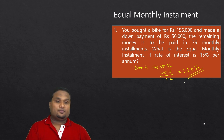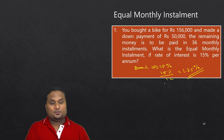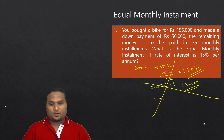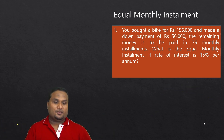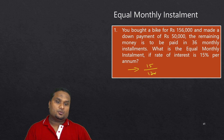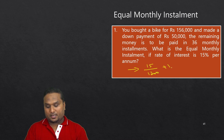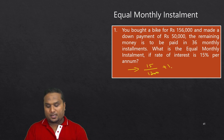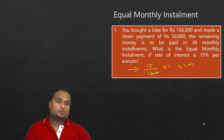Step 1: Instead of dividing by 12 and then by 100 separately, simply divide the annual rate by 1200 and add 1. So: 15 ÷ 1200 + 1 = 1.0125. This is the value we need.